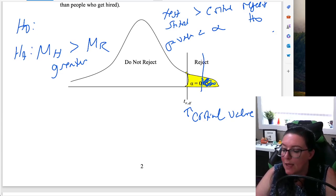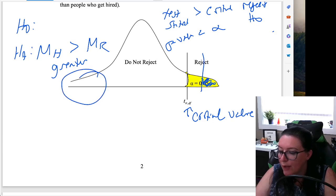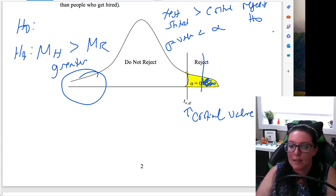If we were going the other way and having it less than, then we'd be looking at this region over here. And if we were looking at equals, not equals, we would be splitting the alpha in two here. So here we are saying we predict that the hired is greater than the rejected, and that's why we're up on the right.